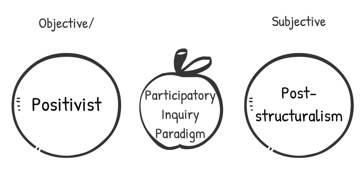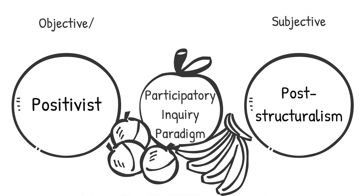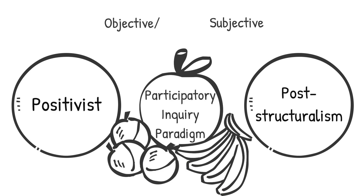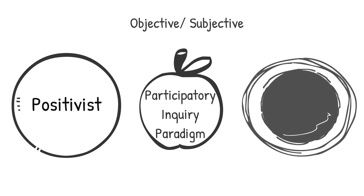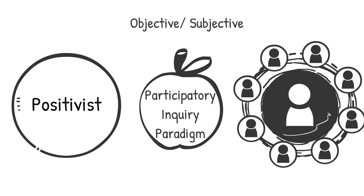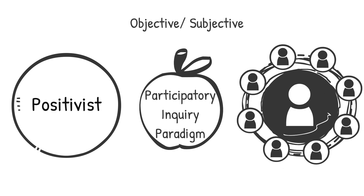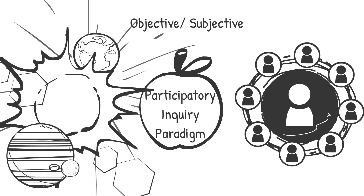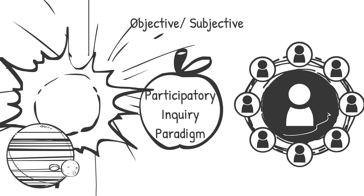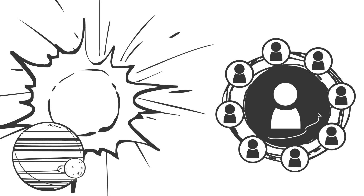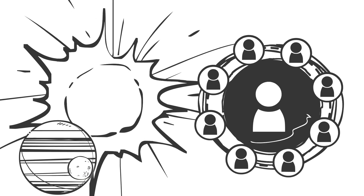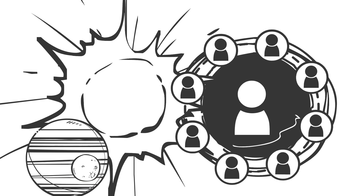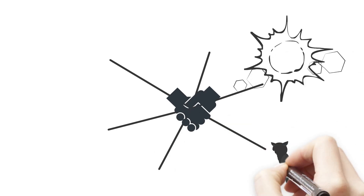Rather, the Participatory Inquiry Paradigm is meant to inhabit a fruitful middle ground, which can be labelled a subjective-objective ontology. It accounts for the complexity of reality and the role of human subjectivity in shaping reality. However, it also recognises that a reality exists which is not dependent on human perception, and it sometimes refers to this as the Cosmos. The Cosmos is understood to dynamically interact with human subjective perception in order to co-create reality. Reality, therefore, is not wholly subjective or objective; rather, it springs from authentic encounters and relationships between the Cosmos and individual beings, including humans.